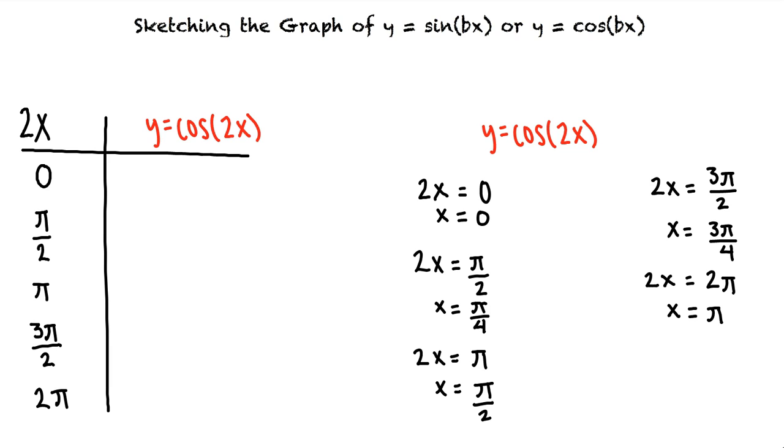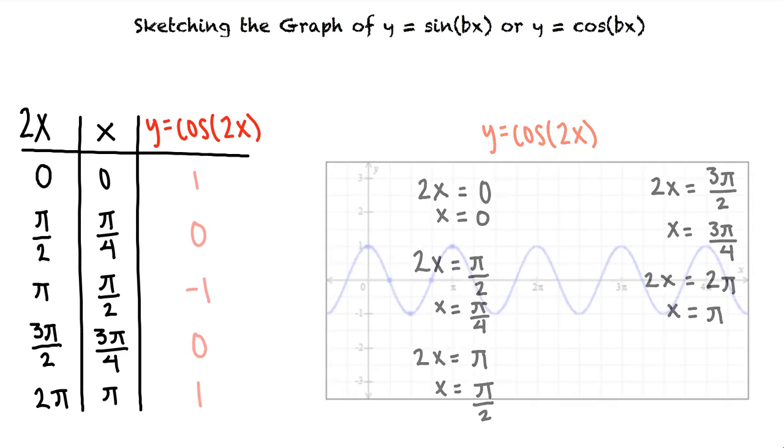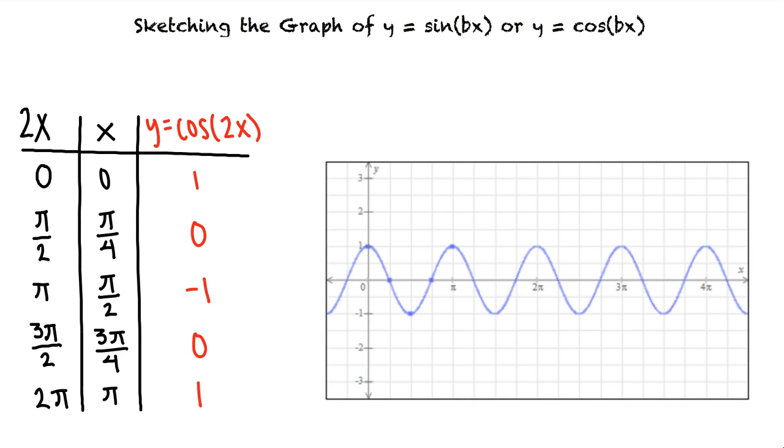If we were to substitute these values into our equation we would once again find outputs of 1, 0, and negative 1. When we graph this we see that multiplying x by a constant greater than 1 will shrink the graph horizontally.